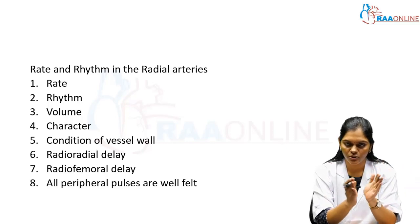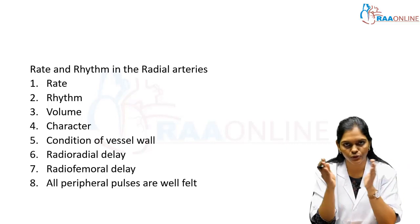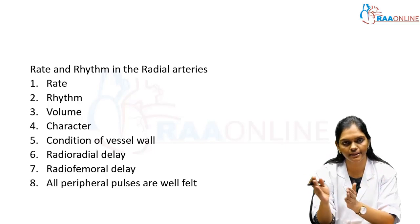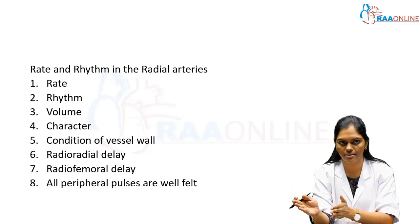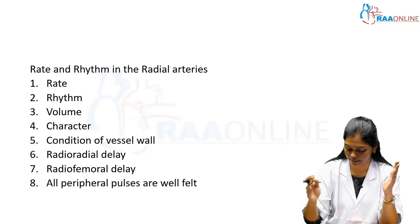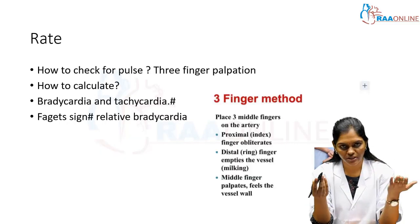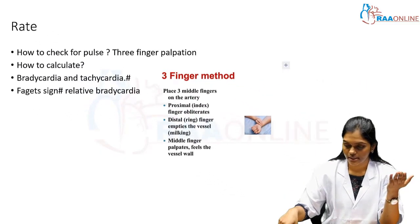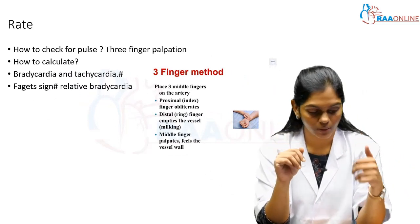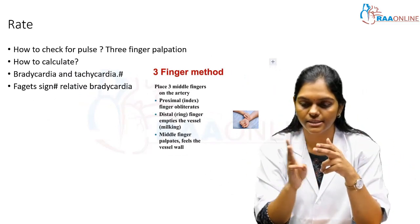First is rate. The normal rate is between 60 to 100. Anything less than 60 is bradycardia, anything more than 100 is tachycardia. They will definitely ask what the normal pulse rate is. How will you check for the pulse? The pulse is checked using a three-finger technique.